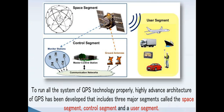GPS has three segments: space segment, control segment, and user segment. We know the application of GPS during air travel — GPS finds our location where we are. GPS finds the location for airplanes, and GPS is used on trucks, ships, and smart devices on our car.